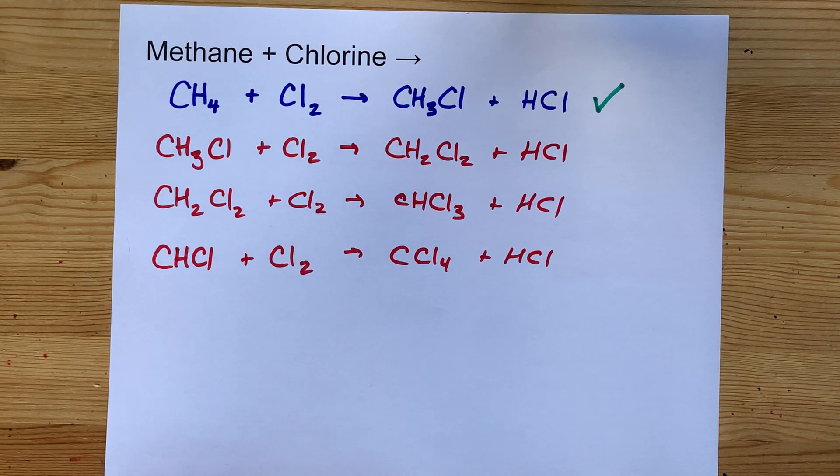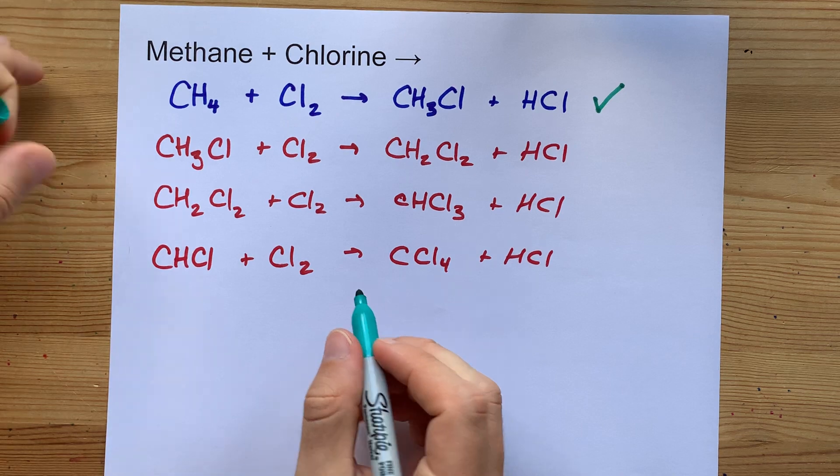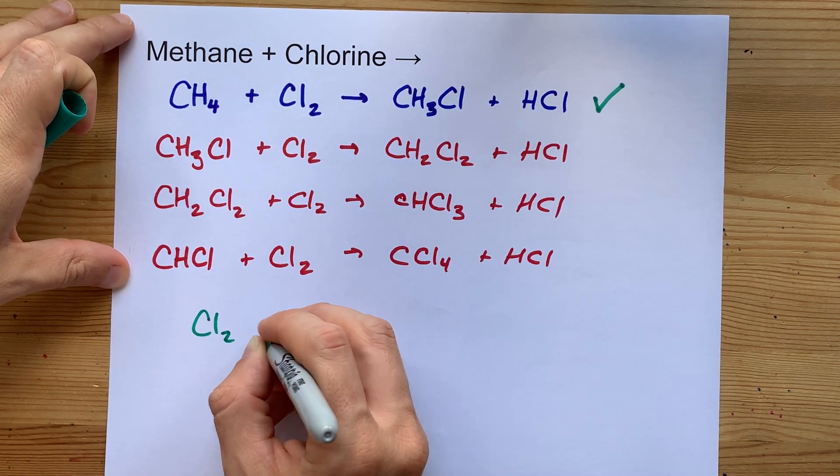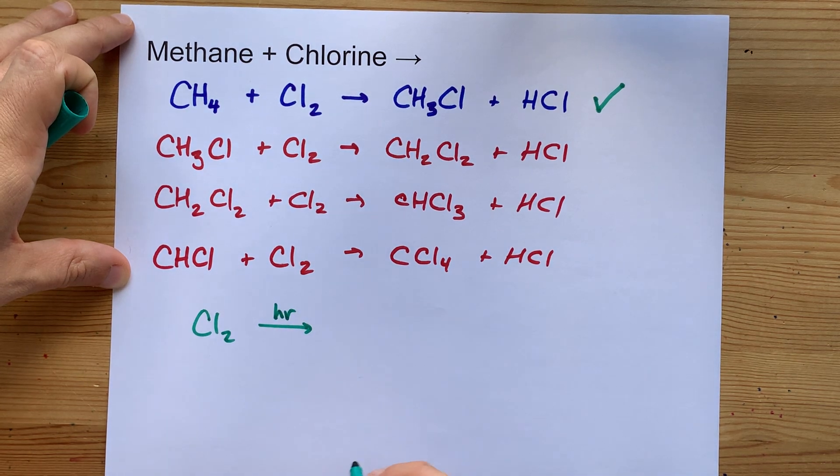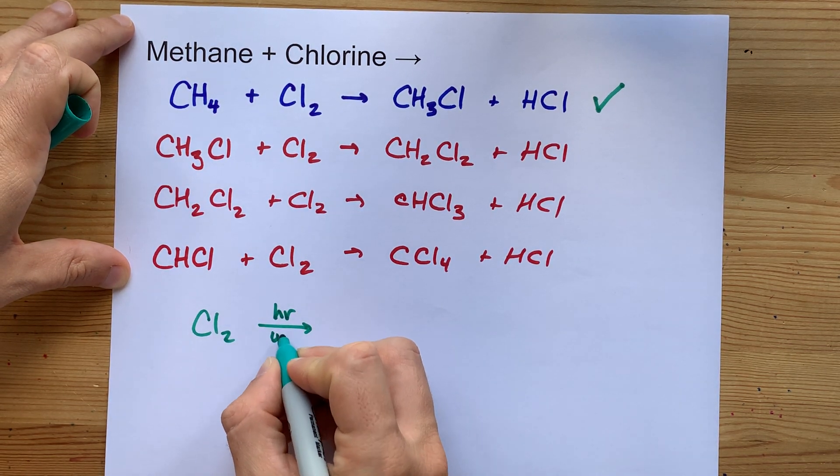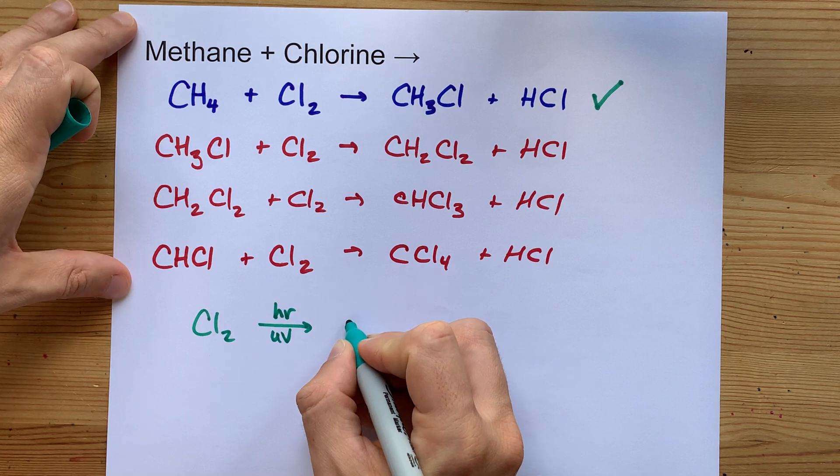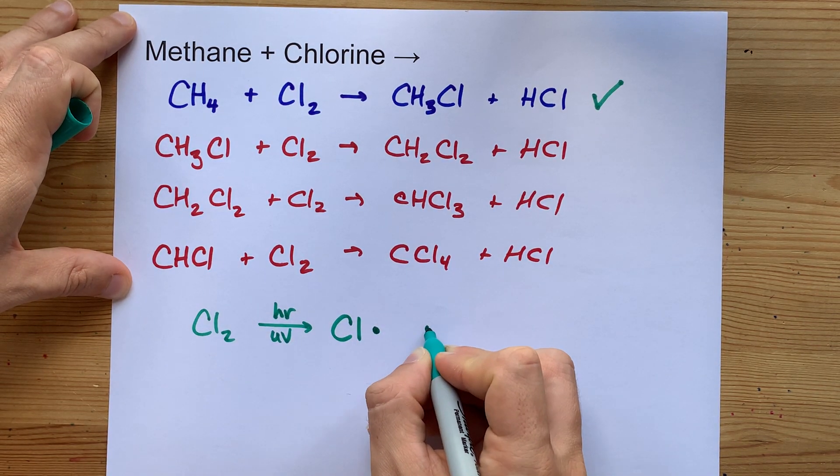Perhaps, though, you came for the mechanism. When chlorine gas reacts with UV light, some people will write that as h nu, some people will write it as UV. What it does is it breaks the chlorine up into two chlorine radicals.